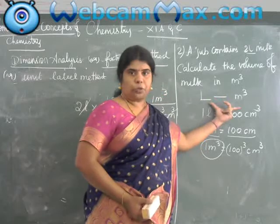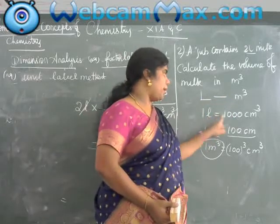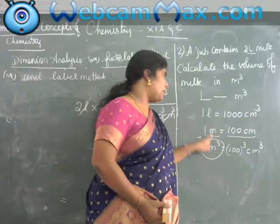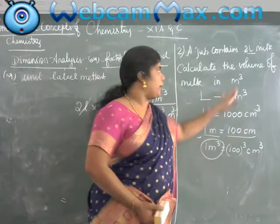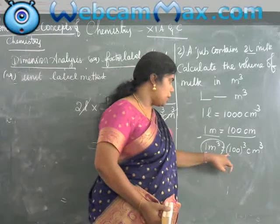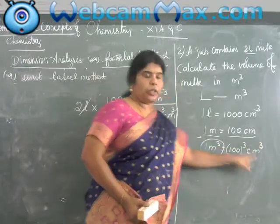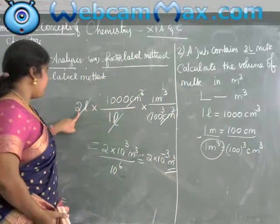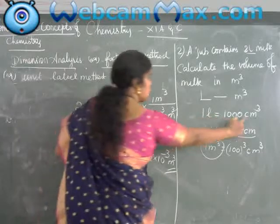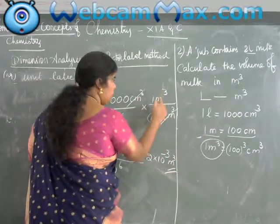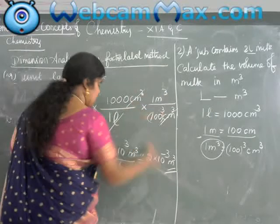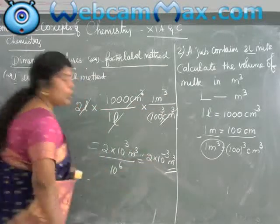My conversion is liter to meter cube. Here 1 liter equals 1000 centimeter cube. The relation between centimeter and meter is: 1 meter equals 100 centimeters. My answer must be in meter cube, so I take the cube on both sides: 1 meter cube equals 100 cubed centimeter cube. I substitute these values — 2 liters into 1000 centimeter cube per liter, then 1 meter cube divided by 100 cubed centimeter cube. Centimeter cube cancels, giving 2 into 10 to the power minus 3 meter cube.